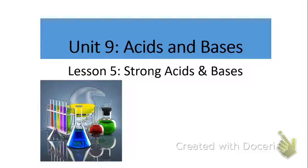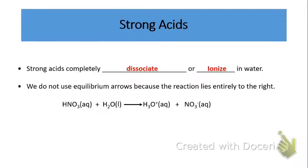Let's get started with Lesson 5, Strong Acids and Bases. A strong acid is one that completely dissociates or ionizes in water. We'll talk about what dissociate and ionize mean in just a moment. We do not use equilibrium arrows because the reaction for a strong acid lies entirely to the right. Here we have an example of a strong acid, which is nitric acid — one of the seven strong acids.